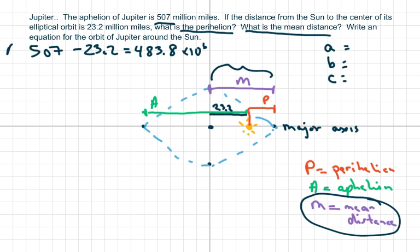That's your mean distance. Now we need the perihelion. All we're going to do is take this amount, our whole distance, and subtract. That's going to be 483.8, and these are all millions of miles, minus 23.2 million, which gives us 460.6 million miles.